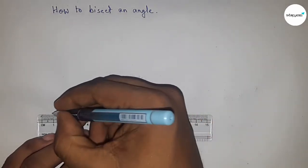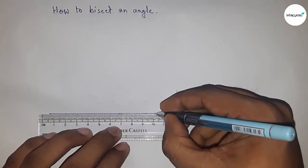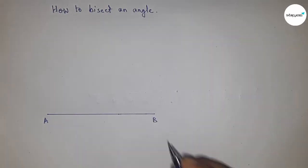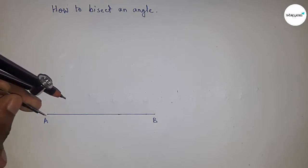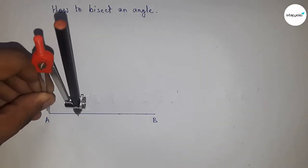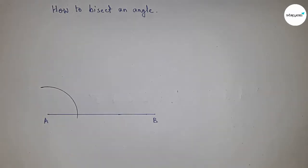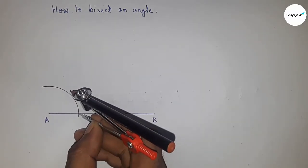I am bisecting an angle. First of all, I need to construct the angle. So first, drawing a line of any length AB. Next, taking any radius and drawing an arc. Here I am going to construct...